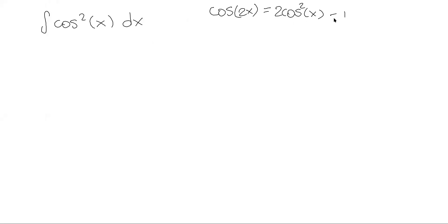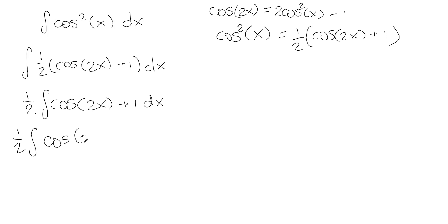So we want to rewrite our integrand so that we're able to use this to our advantage. I want to start by adding 1 to both sides and then divide everything by 2. So what we get is cosine squared x equals 1/2 cosine of 2x plus 1. Let's take our integrand and rewrite it like this. We can move the constant outside and we get 1/2 integral of cosine of 2x plus 1 dx.